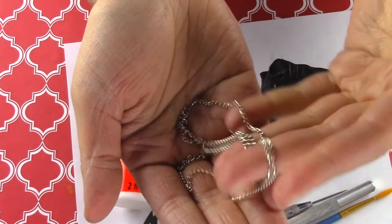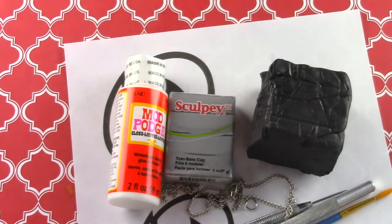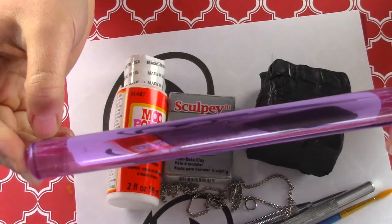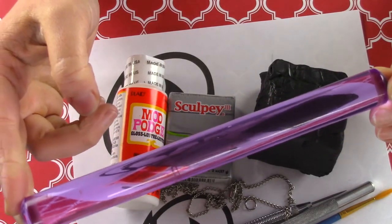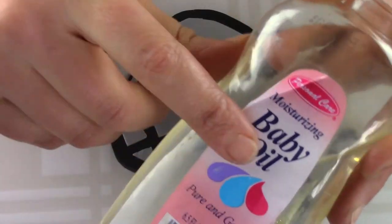A necklace chain. It should be larger than this one, but I'm trying to use up all the supplies I have at home before going to buy more. A rolling pin or a pasta machine to flatten your clay. I'll be using the pasta machine. You'll also need a bead reamer and baby oil if you have them.